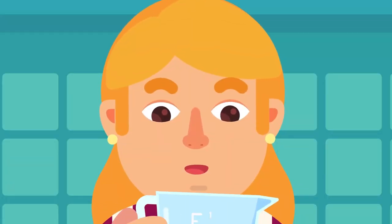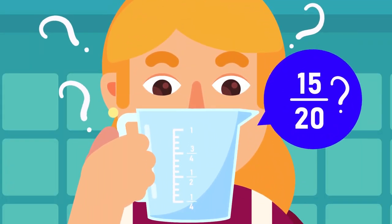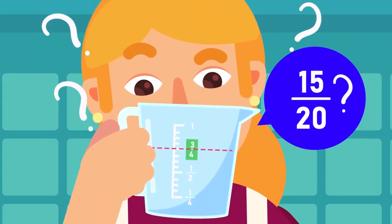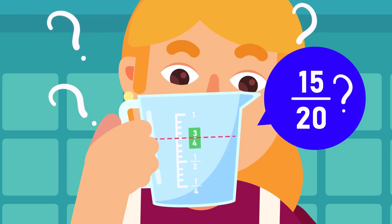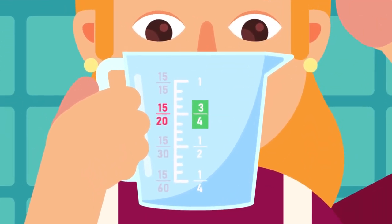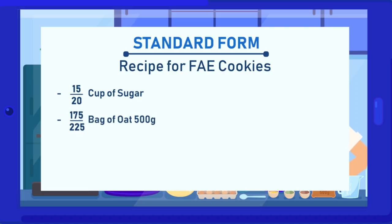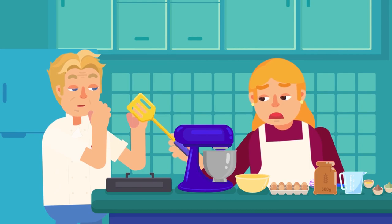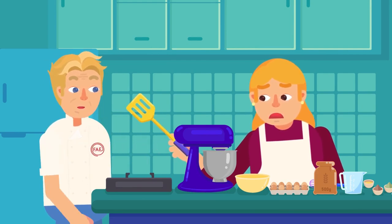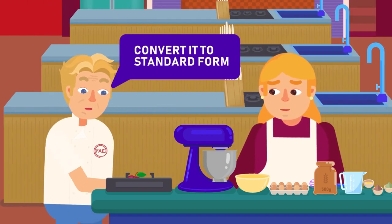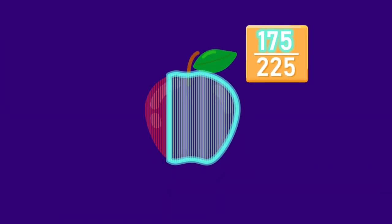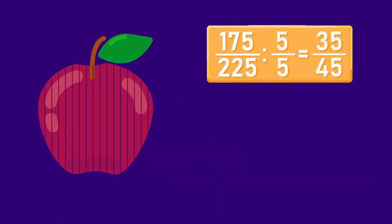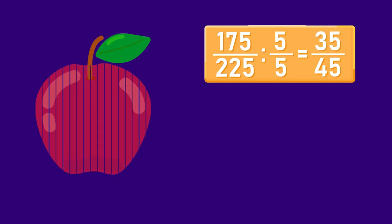Expressing a rational number in standard form: imagining a 15 over 20 cup of sugar is going to be more difficult than imagining a 3 over 4 cup of sugar, yet they have the same value. Calculating with fairly large numbers is also quite complicated. Nearly everyone has trouble making sense of big numbers and negative fractions, which is why we need to convert them into standard form.